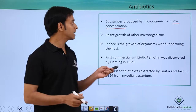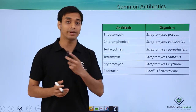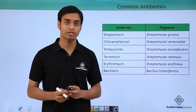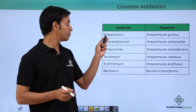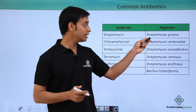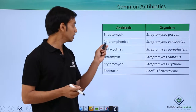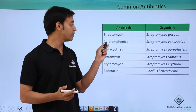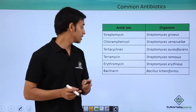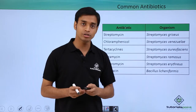Now let us take a look at the common types of antibiotics which doctors prescribe to treat different types of bacterial infections. For example, streptomycin is produced by the organism known as Streptomyces griseus; chloramphenicol is produced by Streptomyces venezuelae; and tetracyclines are produced by Streptomyces aureofaciens.